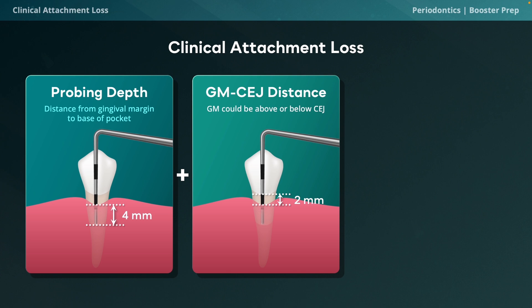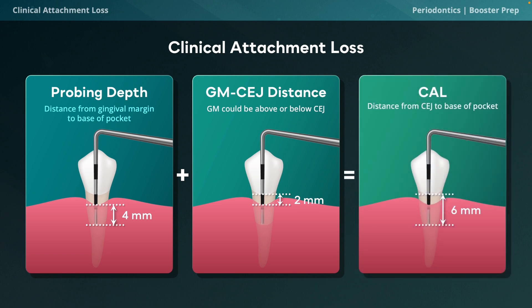This number is positive if the gingival margin is below the CEJ, indicating recession, and negative if the gingival margin is above the CEJ. Clinical attachment loss measures the distance from the CEJ to the base of the pocket. CAL is the most important assessment tool because it considers both pocket depth and gingival recession. To calculate CAL, add the probing depth to the gingival margin-to-CEJ distance. For example: a probing depth of 4 mm plus a gingival margin-to-CEJ of 2 mm gives a CAL of 6 mm.